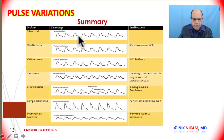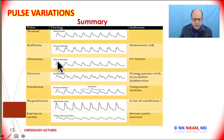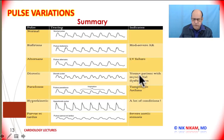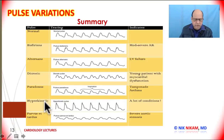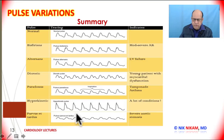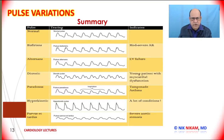In summary, we covered: normal pulse rate; pulsus bisferiens seen in moderate-to-severe aortic regurgitation; pulsus alternans seen in left ventricular failure; the dicrotic pulse waveform seen in myocardial dysfunction; pulsus paradoxus seen in tamponade; hyperkinetic circulation in hyperdynamic states; and pulsus parvus et tardus seen in severe aortic stenosis.